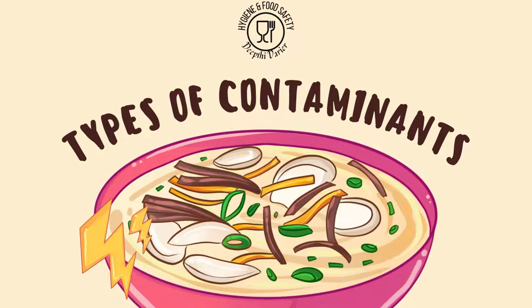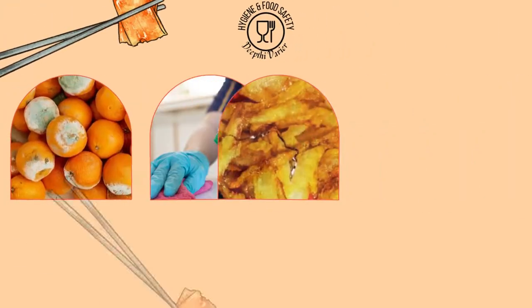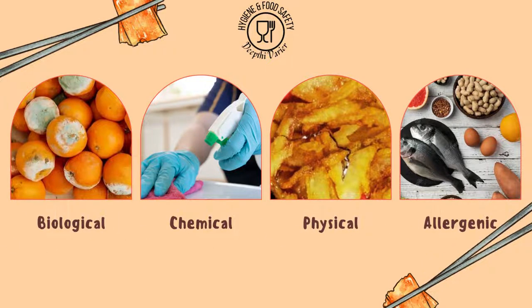When we look at the types of contaminants, there are different types which can enter from any source. They can be introduced into the food from anywhere, but you can group these contaminants — these unwanted materials — under four major headings: biological contaminants, chemical contaminants, physical contaminants, and allergens. Let's look at each one of these in detail.